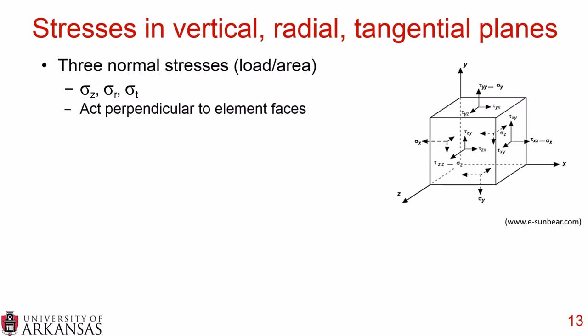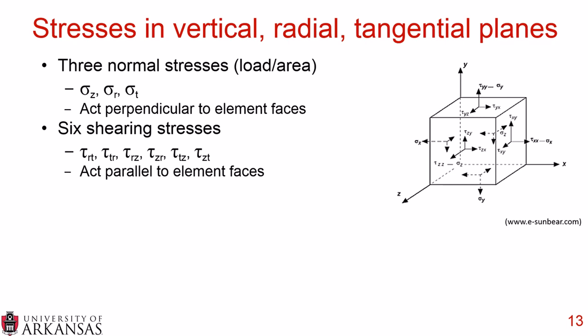When thinking about mechanistic design, we consider stresses in the vertical, radial, and tangential planes. There are three normal stresses — sigma z, sigma r, and sigma t — which act perpendicular to element faces, where stresses are simply a load over an area. There are also six shearing stresses represented by tau, in the RT, TR, RZ, ZR, TZ, and ZT directions, and these act parallel to the element faces. So while there's no movement between layers, there are shear stresses within the material.